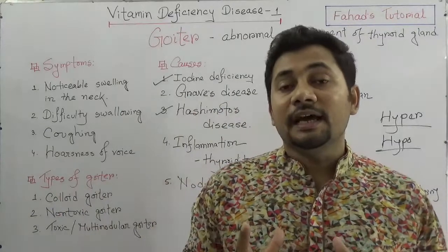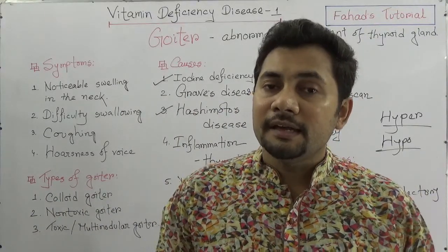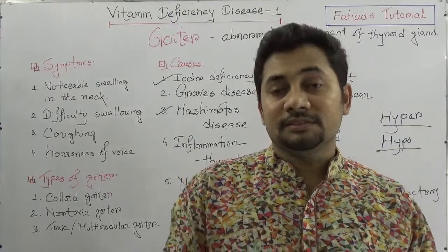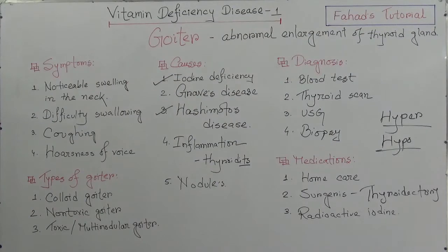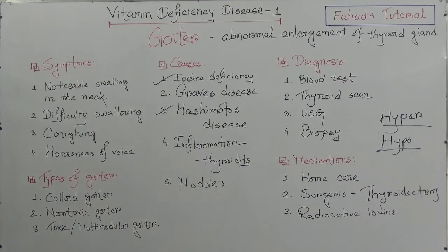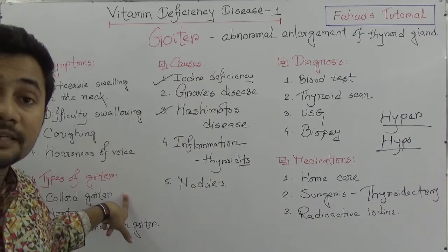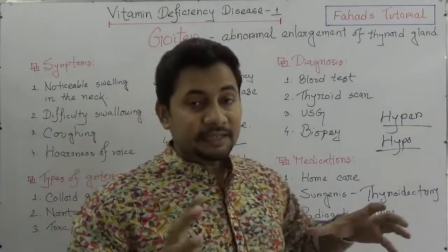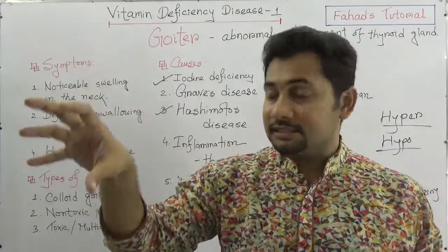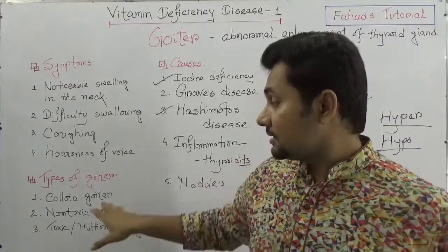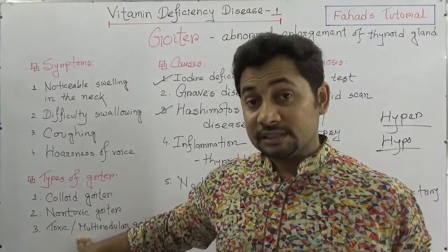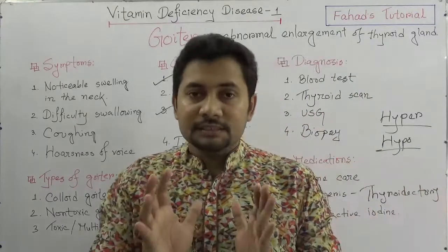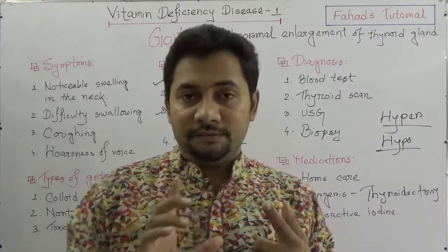Goiter is the abnormal condition of an enlarged thyroid gland. The thyroid gland produces thyroxine hormones important for metabolism. The types of goiter include: colloid goiter, which is endemic — meaning it is geographically fixed in areas where iodine deficiency is prominent; sporadic non-toxic goiter; and toxic goiter, also called multi-nodular goiter.